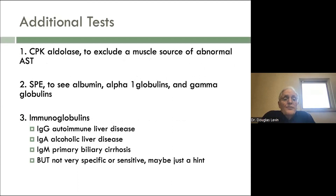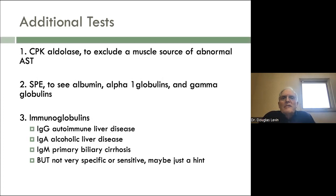Serum protein electrophoresis is a very helpful test — it shows you the albumin, alpha-1 globulins, and gamma globulins. You can have problems with increased gamma globulins associated with autoimmune liver disease, and no gamma globulins associated with acquired hypogammaglobulinemia, which often presents like autoimmune hepatitis. They will not have plasma cells in the liver biopsy, but otherwise it looks pretty similar. Immunoglobulin levels can be semi-helpful but not definitive: in autoimmune liver disease, IgG is generally elevated; in alcoholic liver disease, IgA is often elevated; and in primary biliary cirrhosis, IgM is often elevated. But it's not 100% — don't over-evaluate or overemphasize.